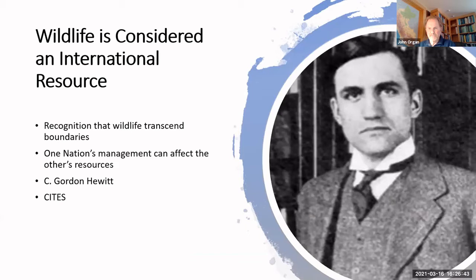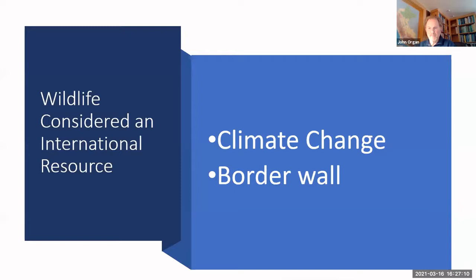The fifth tenet is that wildlife is considered an international resource. Grounded in international treaty, this tenet recognizes that wildlife can transcend borders and one nation's actions can impact another's resources. Examples include the Migratory Bird Treaty of 1916, championed by Canadian C. Gordon Hewitt among others, and CITES — the Convention on International Trade in Endangered Species of Wild Fauna and Flora. Current issues germane to this tenet include climate change, where international cooperation will be essential for species facing range shifts across borders, and border walls, which may threaten the viability of populations by isolating population segments and reducing gene flow.